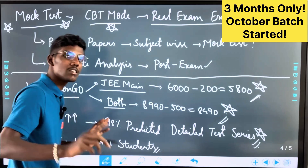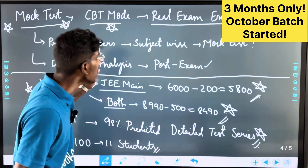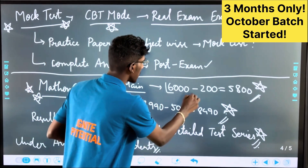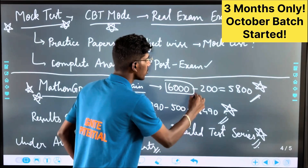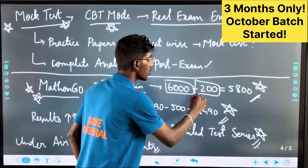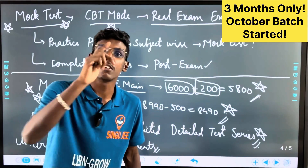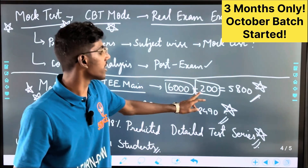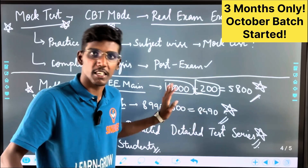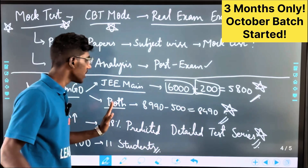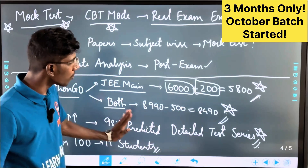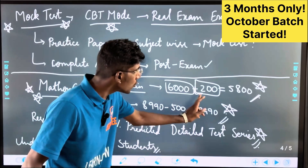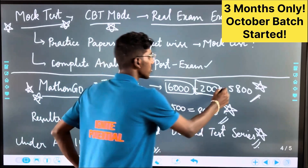Both are JEE Main and JEE Advanced Mockt series. If you get the JEE Main for ₹6,000, you can get a discount. Link in description. There is a discount code called JEE Main. JEE Advanced and JEE Main — both are available. If you get for ₹2,000, you can get it for ₹5,800.